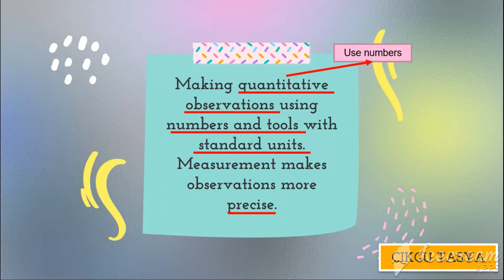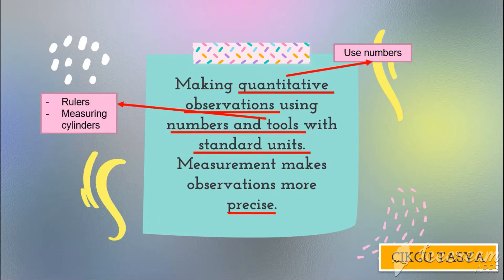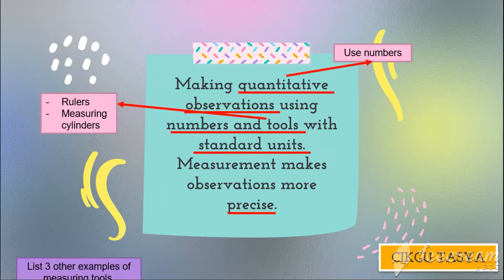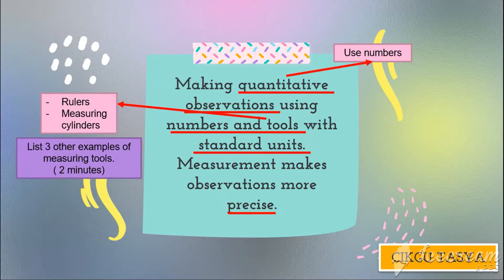Always remember that quantitative uses numbers. The tools we use include rulers and measuring cylinders — things we use to measure objects. You can think of three other examples of measuring tools as well.